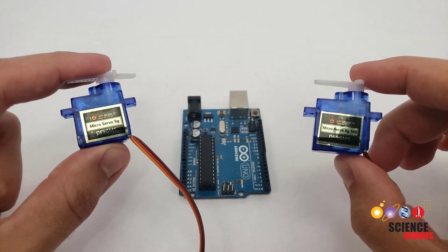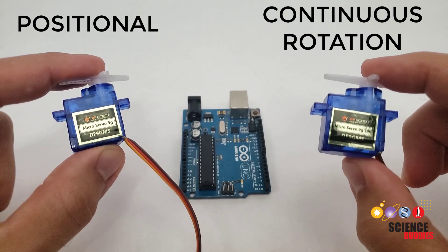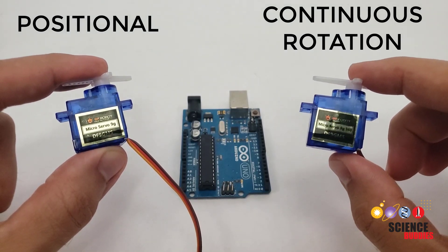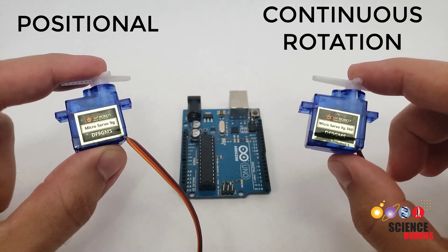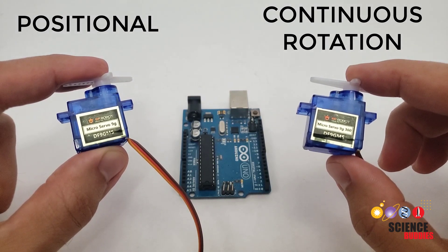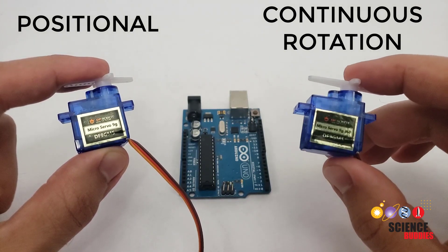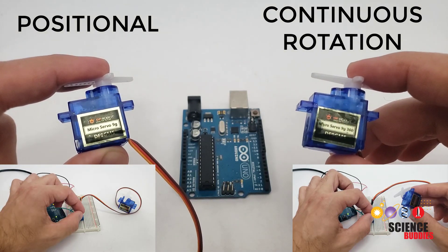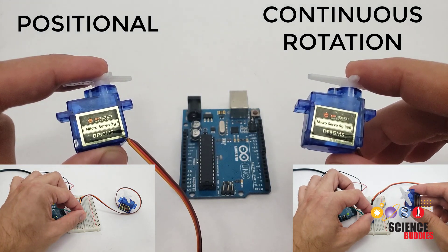Hi, this is Dr. Ben Finio with Science Buddies, and in this video I will talk about the differences between positional and continuous rotation servo motors. These are two types of motors that can look very similar but serve different purposes. In my experience, students can have some confusion when switching between the two, particularly when controlling them with an Arduino. So in this video, I will demonstrate controlling both types with the Arduino servo library.